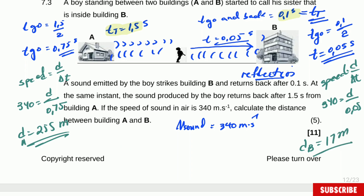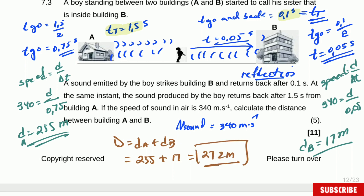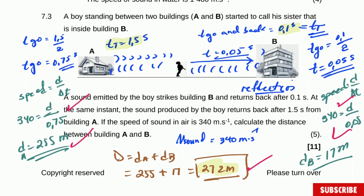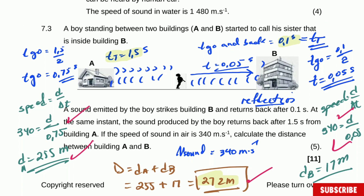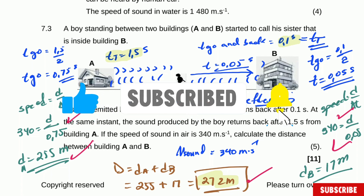The distance between the buildings is distance A plus distance B: 255 meters plus 17 meters, which equals 272 meters. The marks here: one mark for each substitution, one mark for each answer, and one mark for the final answer — so it's four marks total. All you need to know is that the sound travels to the building and comes back, so you divide the total time by two to get the one-way travel time.